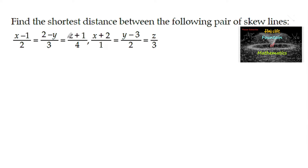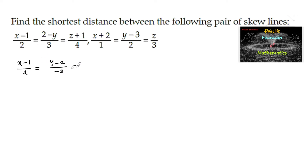Find the shortest distance between the following pair of skew lines: (x−1)/2 = (2−y)/3 = (z+1)/4 and (x+2)/1 = (y−3)/2 = z/3. The given lines we can also write as (x−1)/2 = (y−2)/(−3) = (z−(−1))/4, and the second line as (x−(−2))/1 = (y−3)/2 = (z−0)/3.